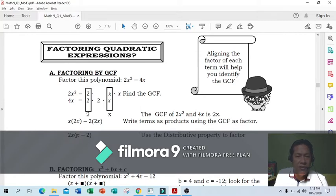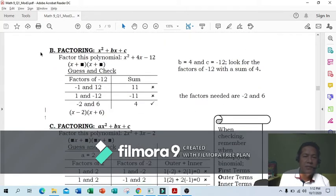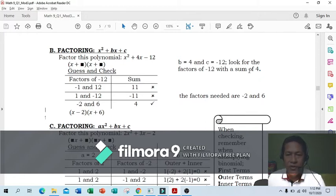Letter B, Case B: factor x squared plus bx plus c. Factor this polynomial sample: x squared plus 4x minus 12. Create two binomials. Factors of x squared are x times x. For the third term which is negative 12, b is 4 and c is negative 12. Look for factors of negative 12 with a sum of 4.